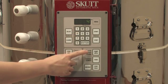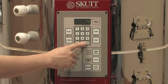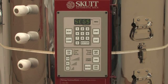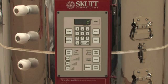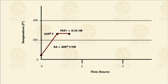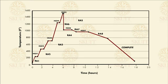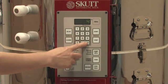After you have chosen a location for your program, press Enter. The next piece of data the controller will ask for is how many segments you want for your program. A segment consists of a rate, a temperature, and a hold time. You may construct a program with up to 8 segments. Enter the number of segments you wish and press Enter.